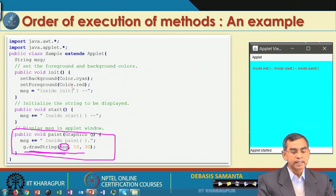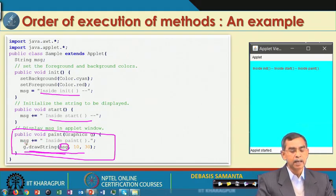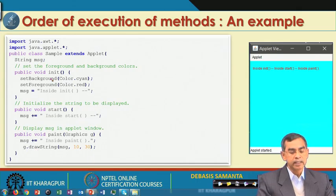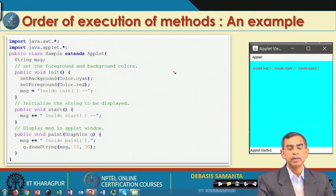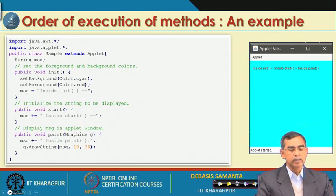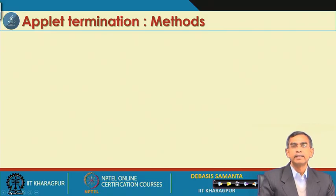So whenever init is executed, the message is initially set inside init. Whenever start executes, the message is appended. Finally, when paint is called, the message is appended again. The message becomes 'inside init', then 'inside start', then 'inside paint'. If we run this, it shows that the order of execution is: first init, then start, then the paint method.